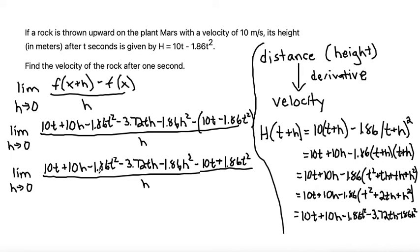Now let me see if I have any like terms I can combine. I have a 10t and a -10t - those can cancel. I have a -1.86t² and a +1.86t². So those can also cancel. What I'm left with is the limit as h approaches 0 of (10h - 3.72th - 1.86h²) all over h.